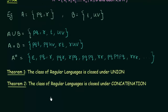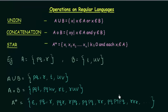I will not be doing the proof of these two theorems here. If you want the proof, you can leave a comment in the comment section below and I will discuss it in a later lecture. I hope the operations on regular languages — Union, Concatenation, and Star — were clear to you. Thank you for watching and see you in the next video.